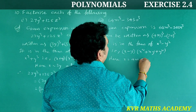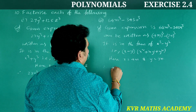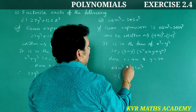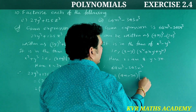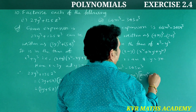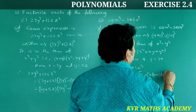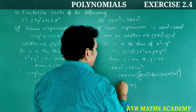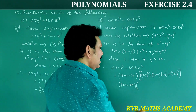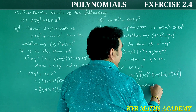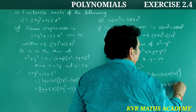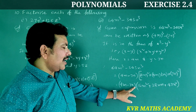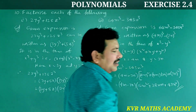Therefore, 64m³ − 343n³ = (4m − 7n)[(4m)² + (4m)(7n) + (7n)²] = (4m − 7n)(16m² + 28mn + 49n²). Have you understood clearly?